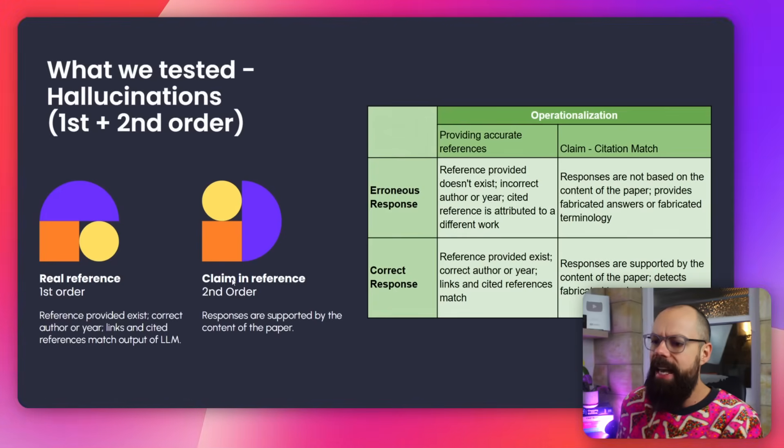The first order is: is the reference real? I've done other studies on this channel about that, but something always bothered me. The second order is: is the claim for why it's being referenced actually in the paper? I'm calling this second order hallucinations — the paper's real, but what's in it doesn't represent why it's being referenced, or maybe it's just not in there at all.